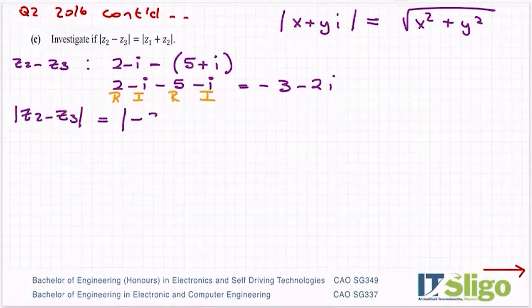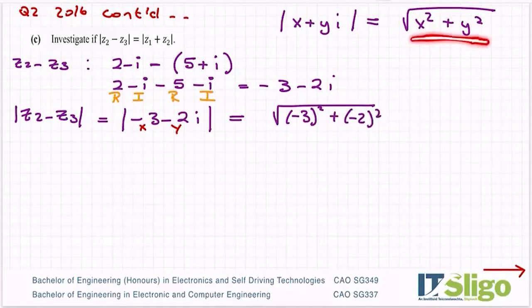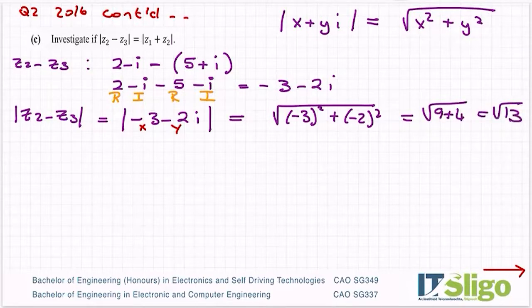Now I can get the modulus of Z2 minus Z3, because it's the modulus of minus 3 minus 2i. So it's the square root of, this in effect is my x part, this in effect is my y part, not the i, just the number before it. It's a bit like the minus b formula, we don't put in the x's, we never put in the i's. It's the square root of the x part squared plus the y part squared. If you put that into the calculator, it's the square root of 9 plus 4, so it's root 13.